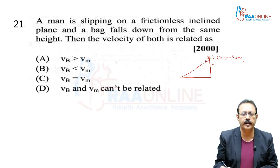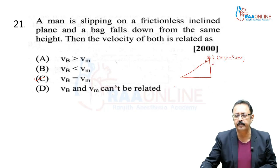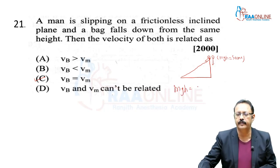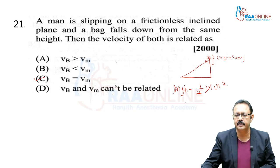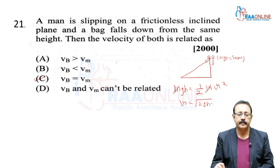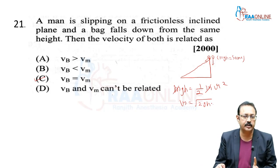So we are going with option C. mgh converts into ½mv². Mass doesn't matter, only height matters. In both cases we get velocity = √(2gh). That is why mass was not given.